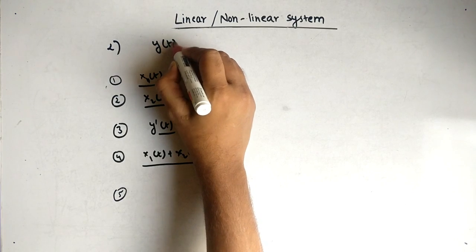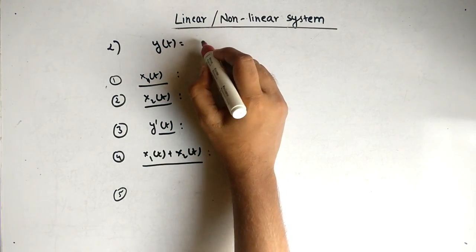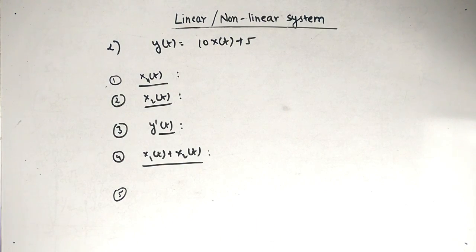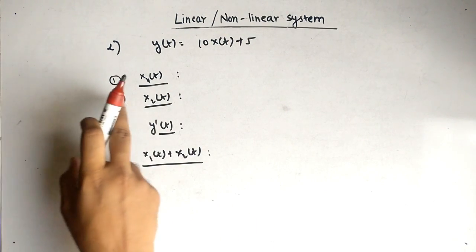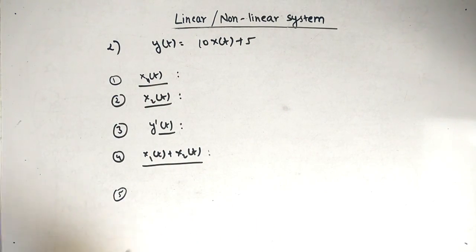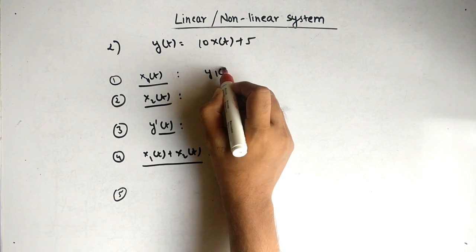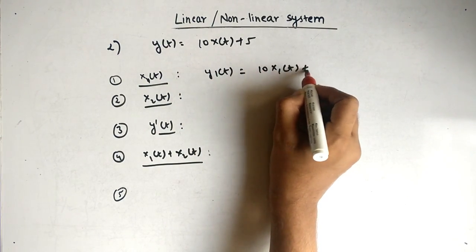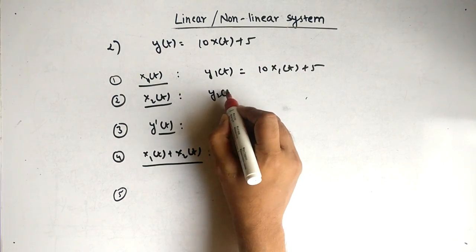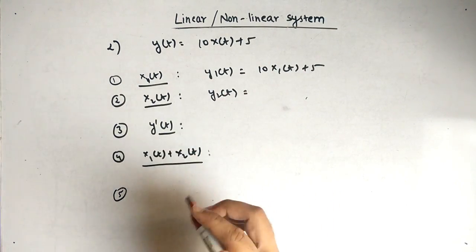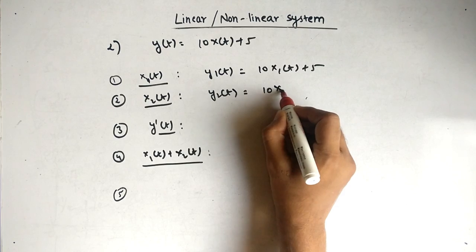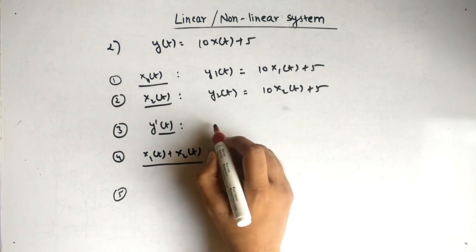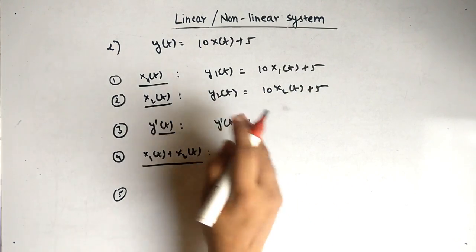Let's take a second example: y of t equals 10 times x of t plus 5. First step — for x1 of t as input, y1 of t equals 10 times x1 of t plus 5. Similarly, y2 of t equals 10 times x2 of t plus 5. y-dash of t is found by adding both.